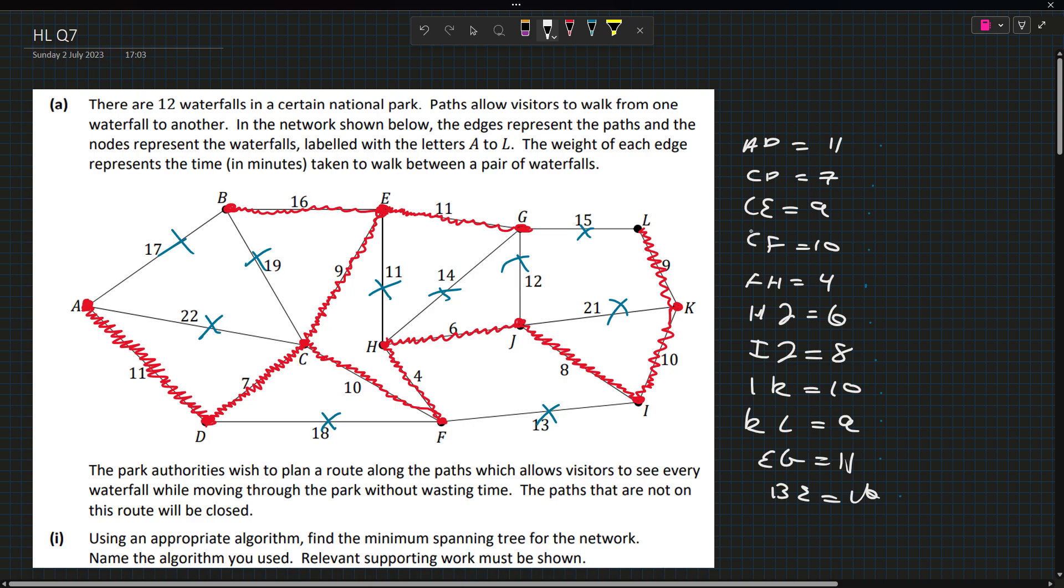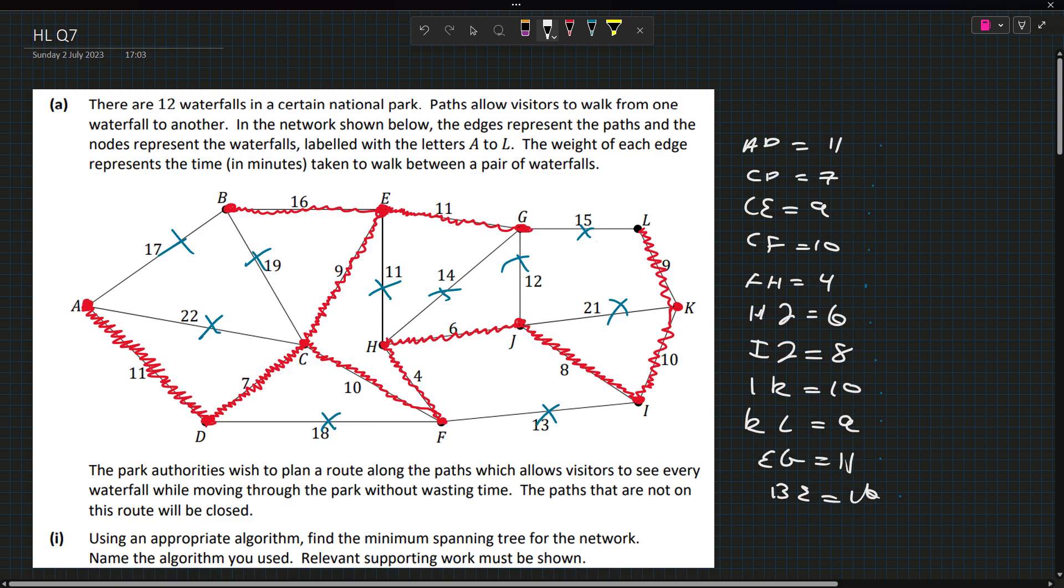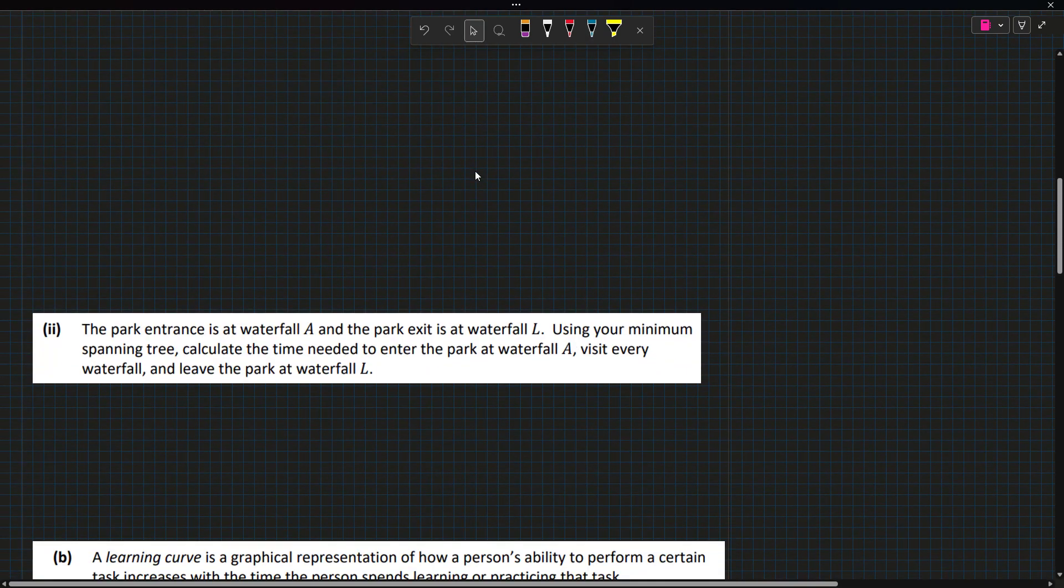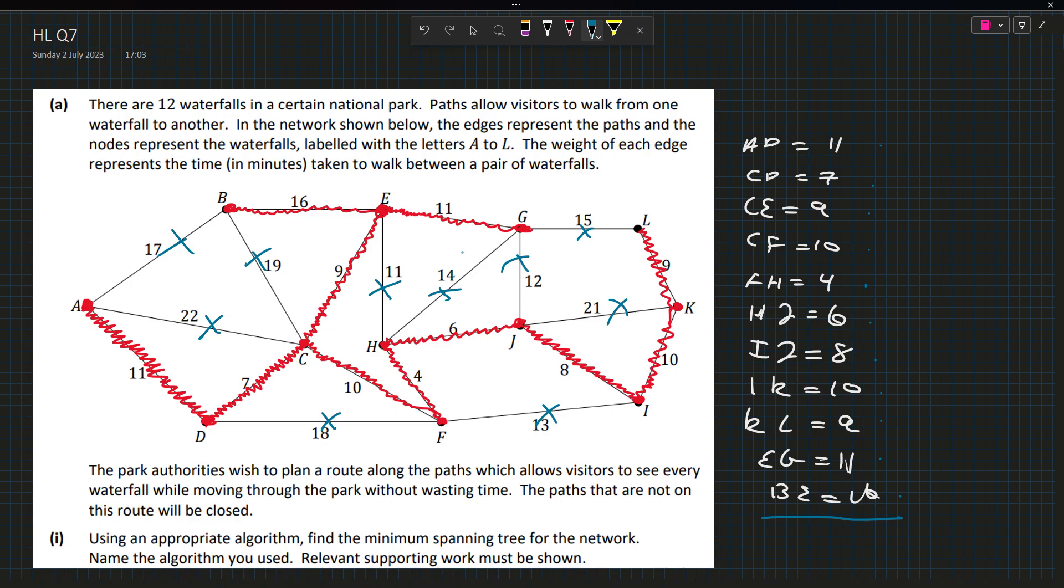Now this is actually a slightly complex question because if we want to visit every waterfall and go on a particular path, we'd have to go A, D, C, E. Then we could have to go G back to E and then E back to B, and then to E and then continue on our way. So the actual minimum weight of our spanning tree is 11 + 7 + 9 + 10 + 4 + 6 + 8 + 10 + 9 + 11 + 16, which is 101.